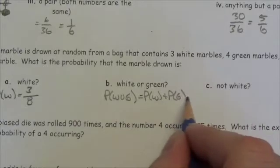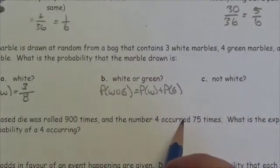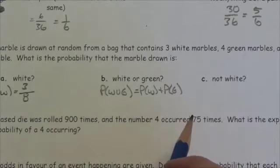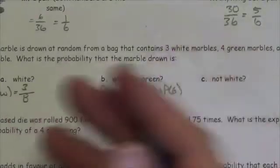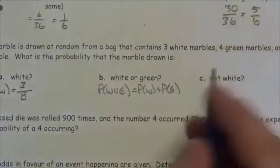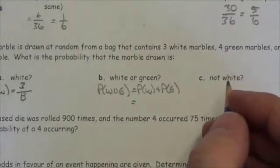Do I need to subtract the overlap between those two? The answer is no. It is not possible for there to be a marble that's both white and green, at least not implied by this scenario here. So I'm just going to add those up. These two sets are mutually exclusive.